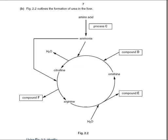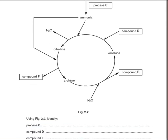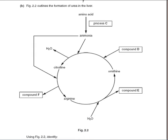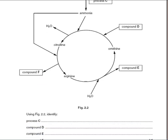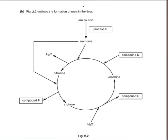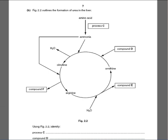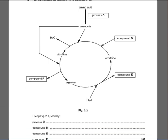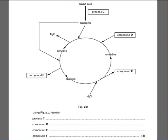B says, figure 2.2 outlines the formation of urea in the liver. Here, as we can see, we've got on the top an amino acid going to ammonia. What I'll do is, I'm actually going to see if I can shrink this so it doesn't lose too much. There we go. So we can see some of the questions as well.